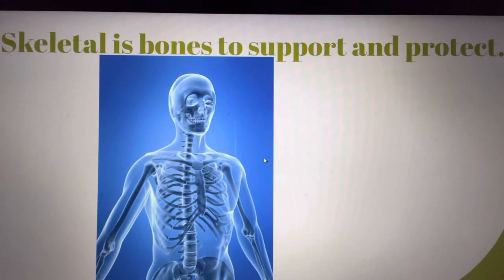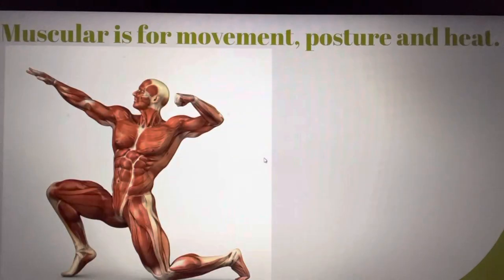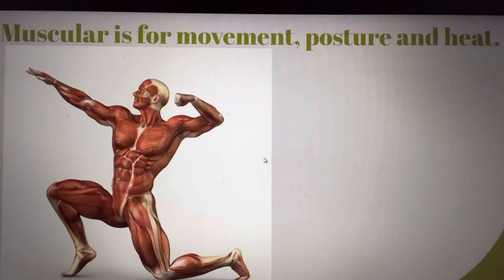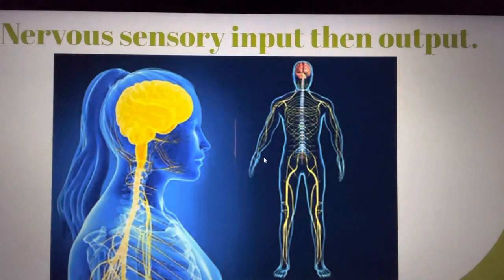Skeletal is bones to support and protect. Muscular is for movement, posture, and heat. Nervous sensory input and output.